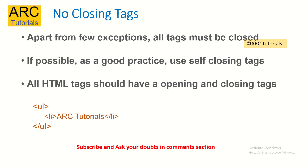The second common mistake that I see is that there are no closing tags. Apart from few exceptions, all tags must be closed. If possible, as a good practice, use the self-closing tags for those where you don't have a closing tag. But all HTML tags should have an opening and a closing tag. For example, if you see a ul opened here, it should have a closing ul. If you see a list li, it should have a closing li tag. So the golden rule again is for every HTML tag that you open, it should have a closing tag.